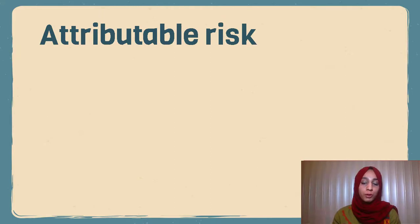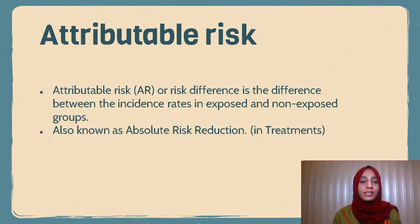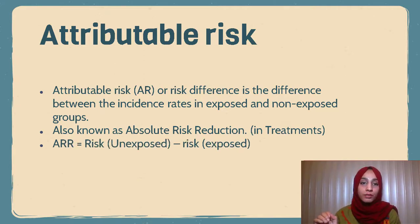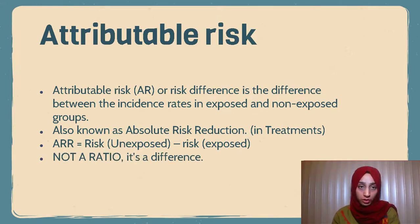Attributable risk, or risk difference, is the difference between the incidence rates in the exposed and non-exposed populations. This is also known as absolute risk reduction in treatments. The formula for absolute risk reduction or attributable risk is the risk for non-exposed people to develop the disease minus the risk of exposed people to develop the disease. It is the difference between the risks, not a ratio like relative risk.